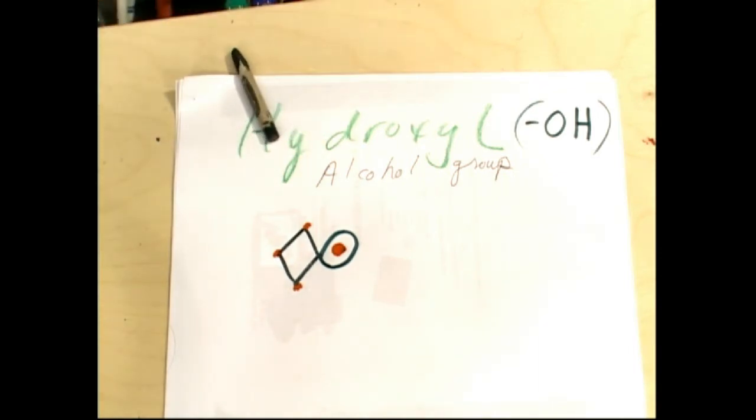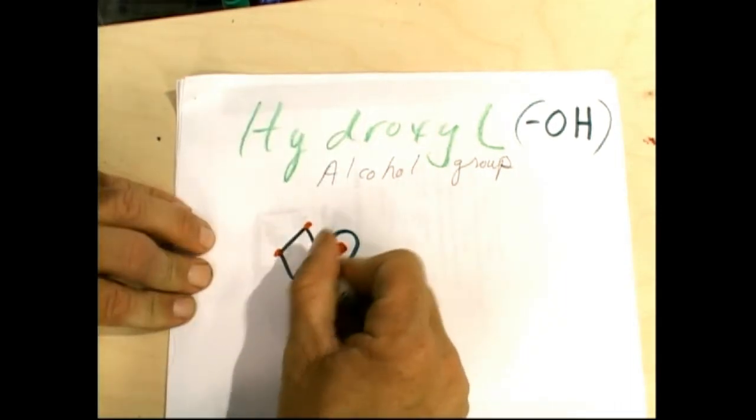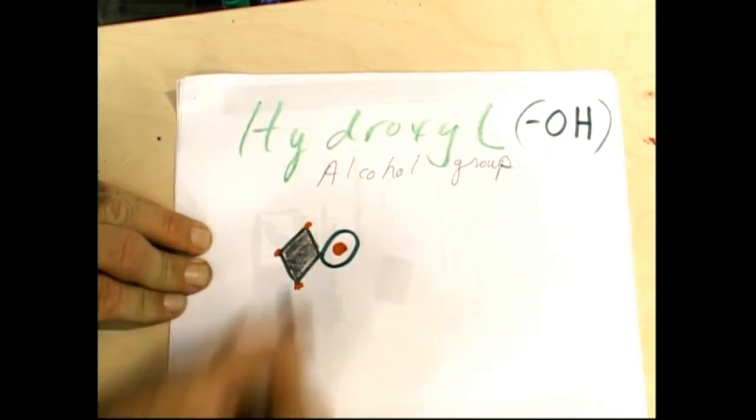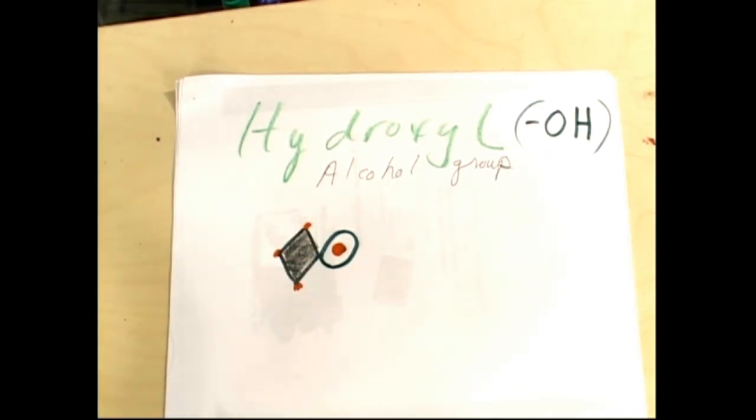Found our black crayon. All our other markers are on the floor. We can color this carbon in. This, by the way, would be methanol.